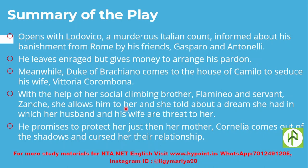Their relationship is most probably lustful love, but still Brachiano promises to protect her. Just then, her mother Cornelia comes out of the shadows, having listened to them, and curses Vittoria for having such a relationship.